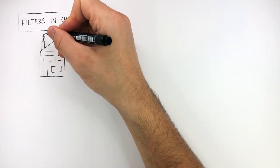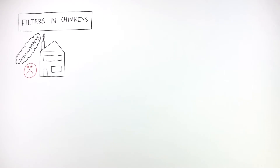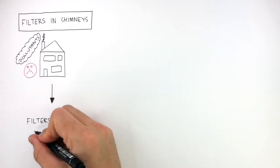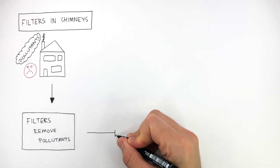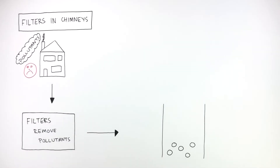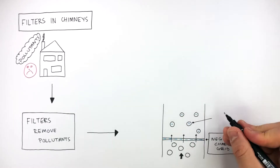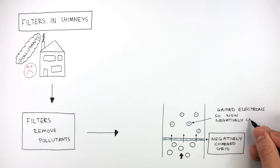Filters in chimneys are really important because houses release a lot of pollutants through their chimneys when wood and coal are burnt, which is bad for the environment. A solution is to use filters which remove pollutants. Smoke particles pass through a negatively charged grid, gain electrons, and become negatively charged.